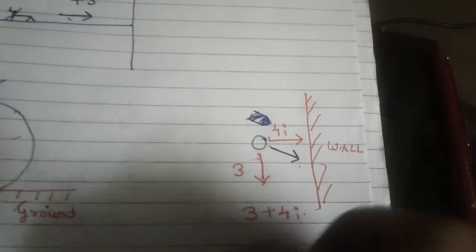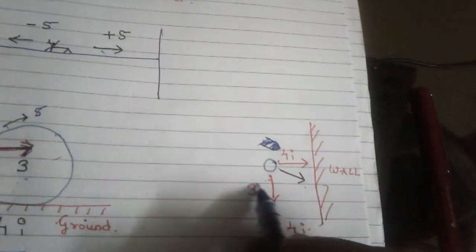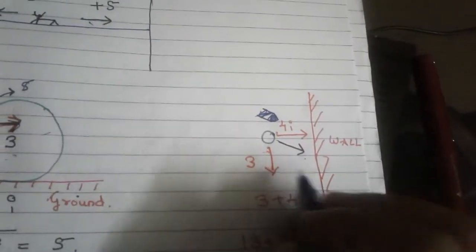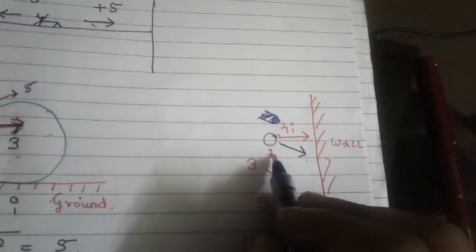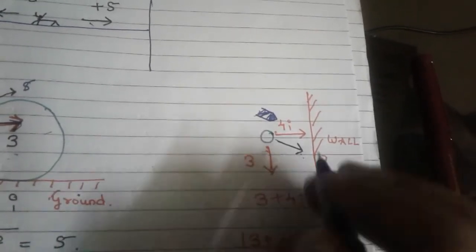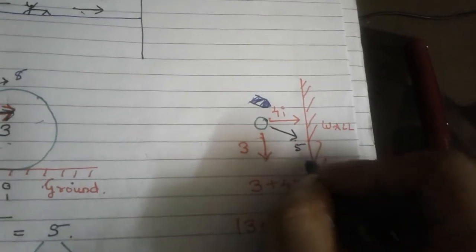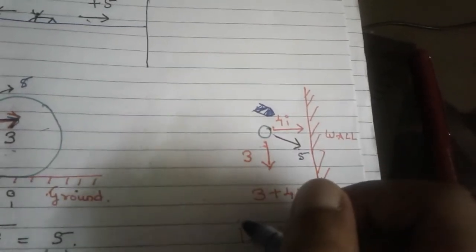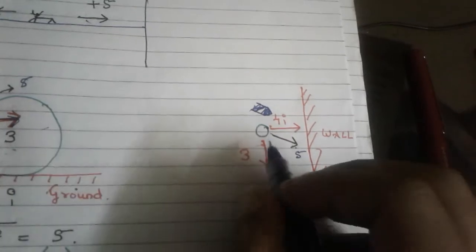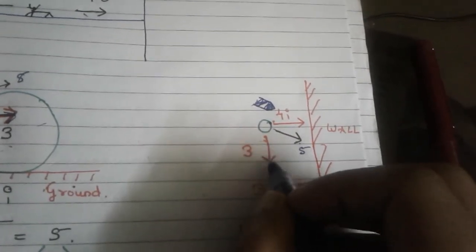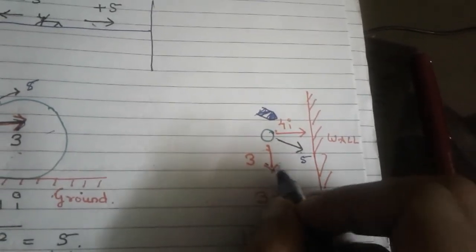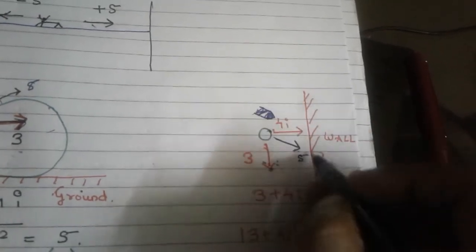Now let's change the reference surface and make it a wall instead of the ground. Imagine a ball coming at an angle and hitting the wall. In this case also there are two components — the velocity of the ball, just 5, is getting split into 3 and 4. We name it as 3 plus 4i. But in this case, 3 is the real component because it is running parallel to the wall.